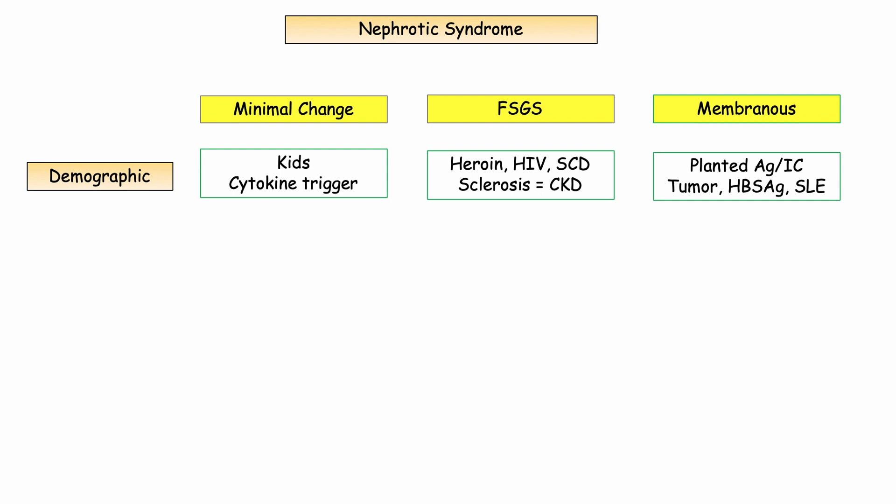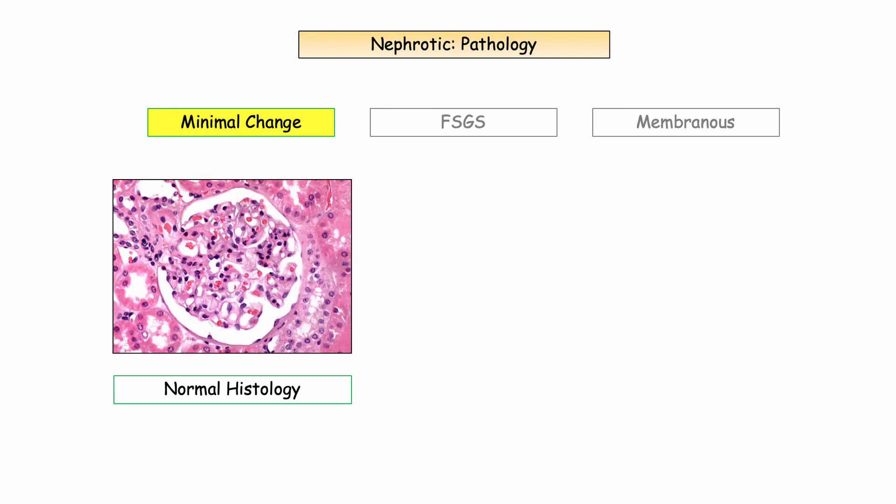This will all come together after reviewing the pathology. Pathology is big with the primary glomerulopathies, but with nephrotic syndromes it is fairly logical. Starting with light microscopy: minimal change means just that — minimal change. Nothing is seen. Normal histology.